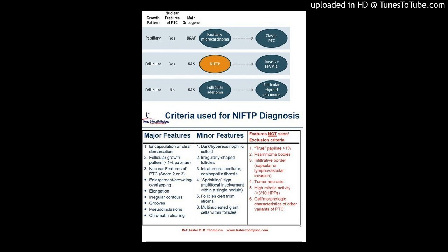Non-invasive follicular thyroid neoplasm with papillary-like nuclear features (NIFTP): Pathologic diagnostic criteria. Inclusion criteria — major features: encapsulation or clear demarcation; follicular growth pattern with less than 1% papillary. If solid, trabecular, or insular patterns are seen, these in total should be less than 30% of the total tumor volume. No psammoma bodies.